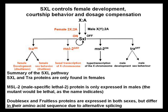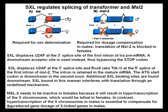Sex lethal controls female development, courtship behavior, and dosage compensation. Sex lethal and transformer proteins are only found in females. MSL2 — male specific lethal 2 — is only expressed in males; the mutant would be lethal if expressed in females or if not expressed in males. Double sex and fruitless proteins are expressed in both sexes but differ in amino acid sequence due to alternative splicing. Sex lethal regulates splicing of transformer and MSL2. MSL2 is required for dosage compensation in males, but its translation is blocked in females by transformer. MSL2 must be inactive in females because hypertranscription of the X chromosome would be lethal; in males, however, hypertranscription of the X chromosome is essential to compensate for the reduced gene dosage of X-linked genes.